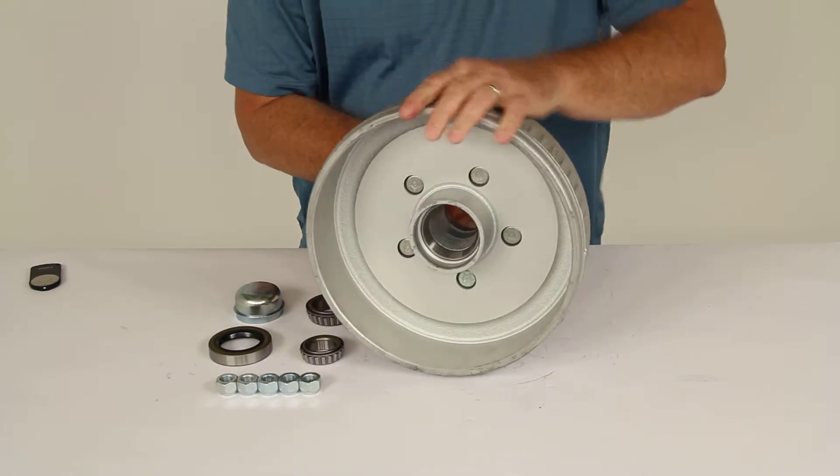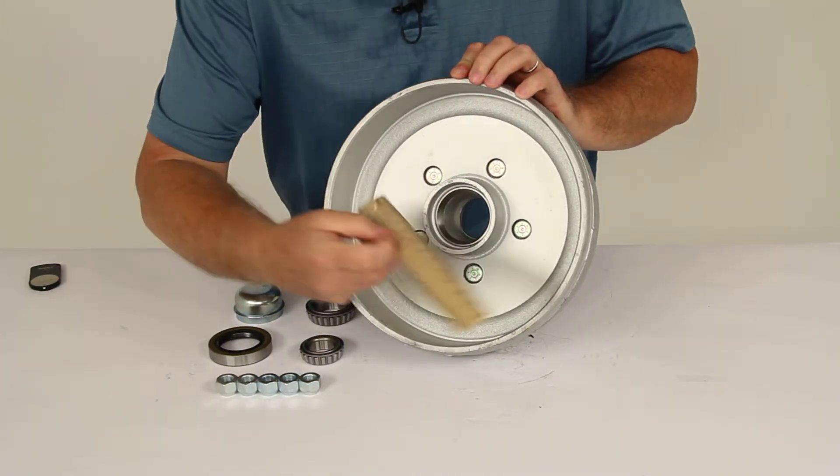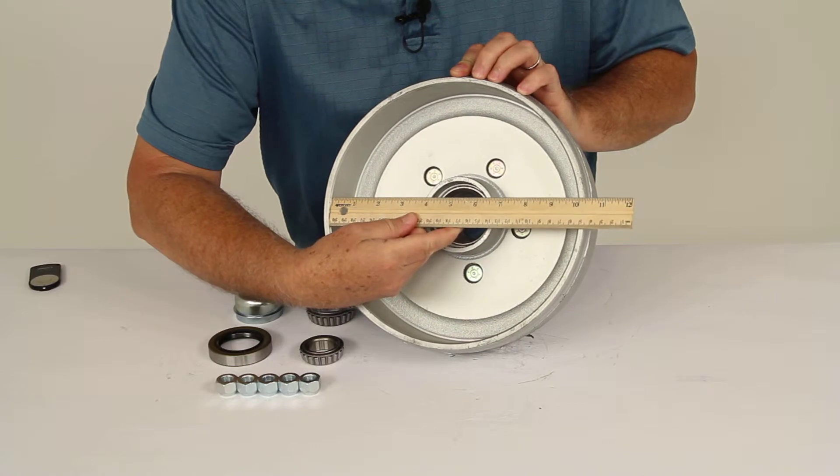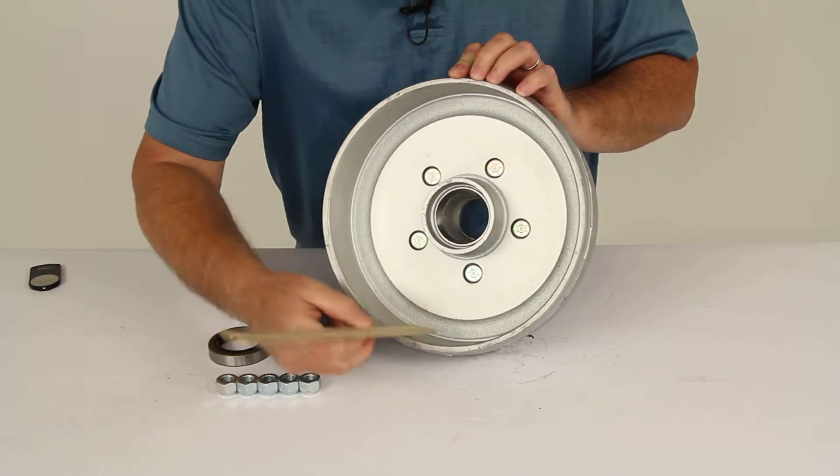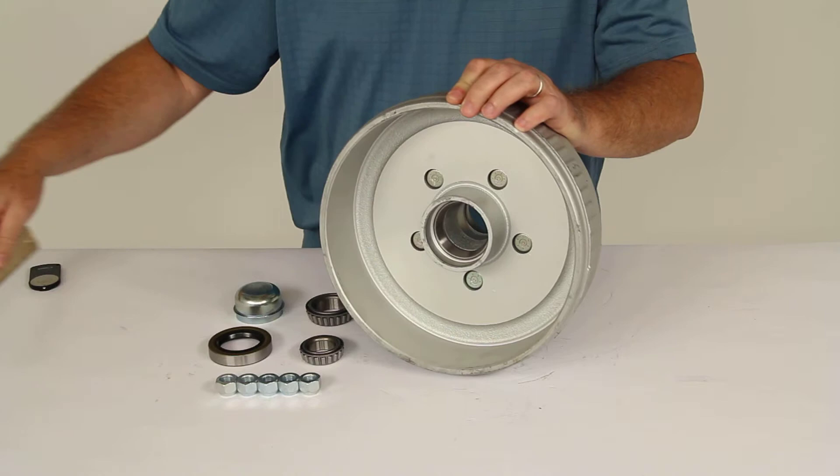Now the dimensions on this drum. Again, the diameter is going to be 10 inches, and the width of it is going to be 2-1/4 inches.